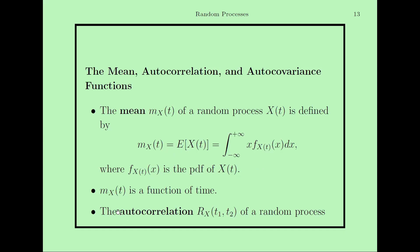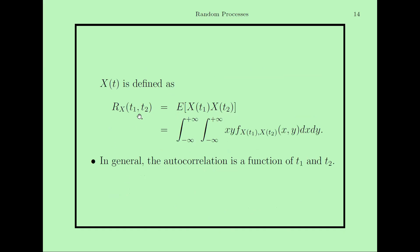Now, the autocorrelation function R_X(t1, t2) of a random process X(t) at two different times is denoted by R subscript X. Autocorrelation means: what is the correlation between the same process at different times? It is calculated as the expected value of X(t1) times X(t2), expressed as a double integral: x·y times f_{X(t1)}(x)·f_{X(t2)}(y) dx dy.